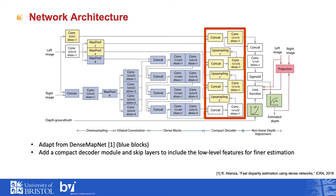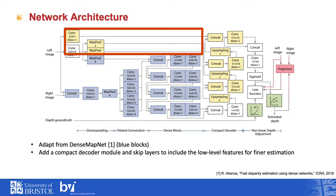Then the feature maps are enlarged to the original resolution. Instead of applying upsampling only once as in the dense map net, we propose a compact decoder using stepwise upsampling by two, as shown in the yellow blocks. In addition, we add skip connections by merging the low-level feature maps of the left image at every upsampling step. This captures pixel-wise collocation between the RGB image and the depth map at both full resolution and feature levels.